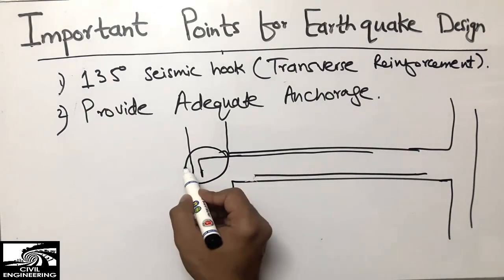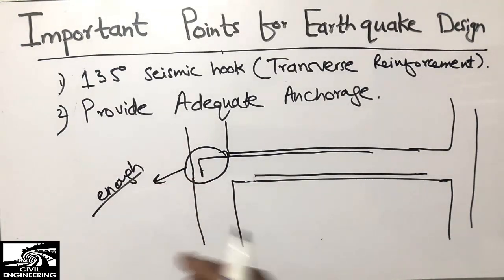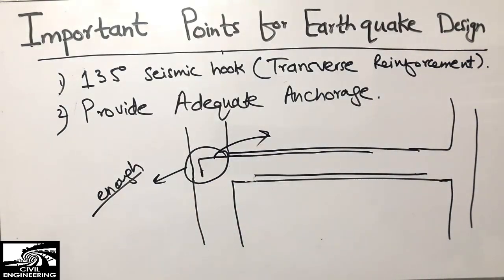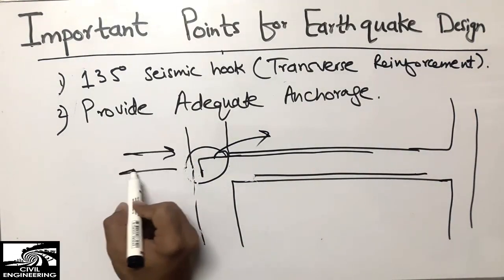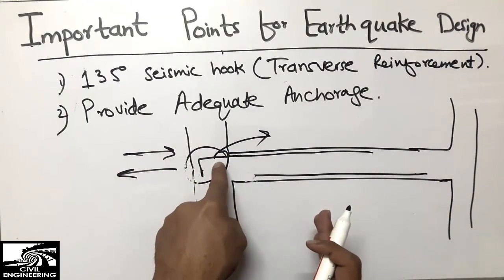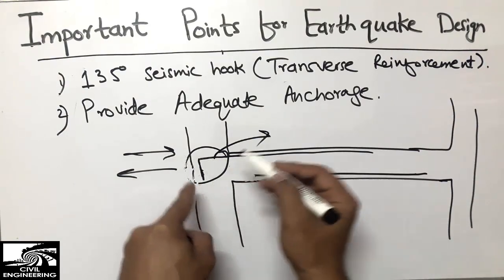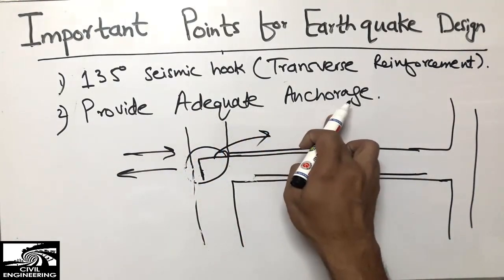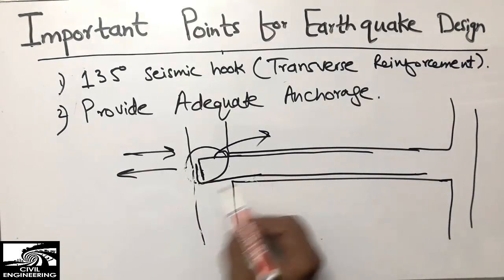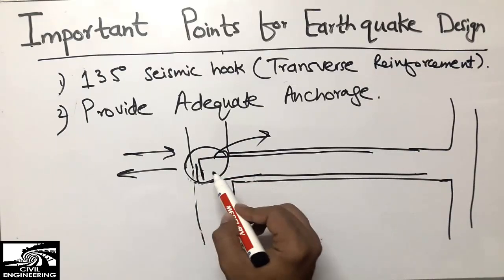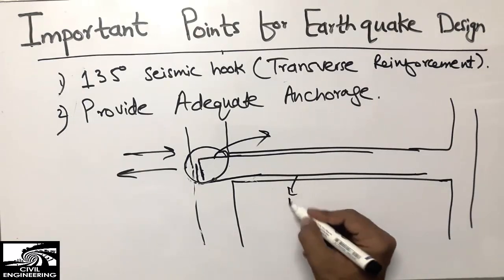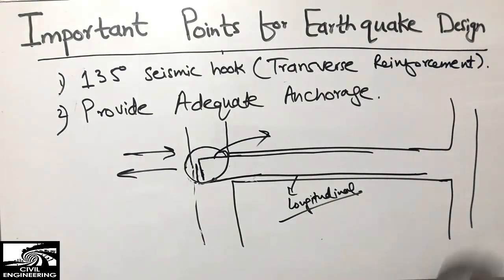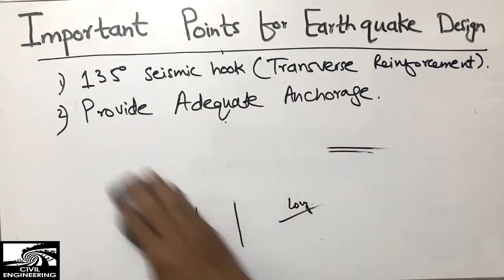The top reinforcement comes down through the full column depth. This anchorage length must be sufficient so that when an earthquake displaces the structure laterally, the beam reinforcement does not pull out of the column. This principle applies to both top and bottom longitudinal bars of beams — not to the transverse reinforcement discussed in the first point.